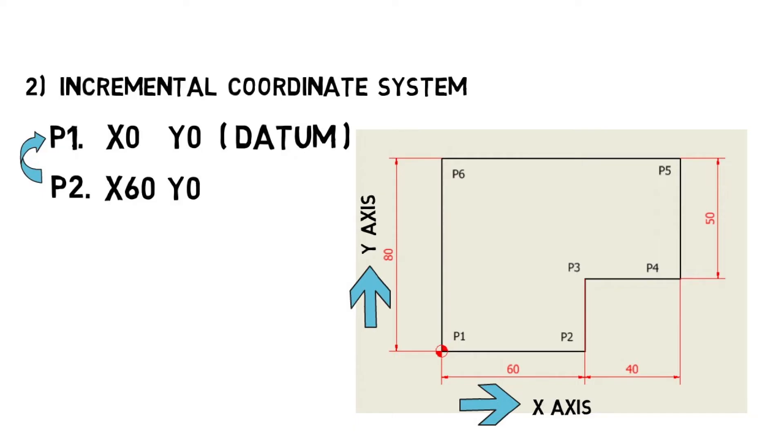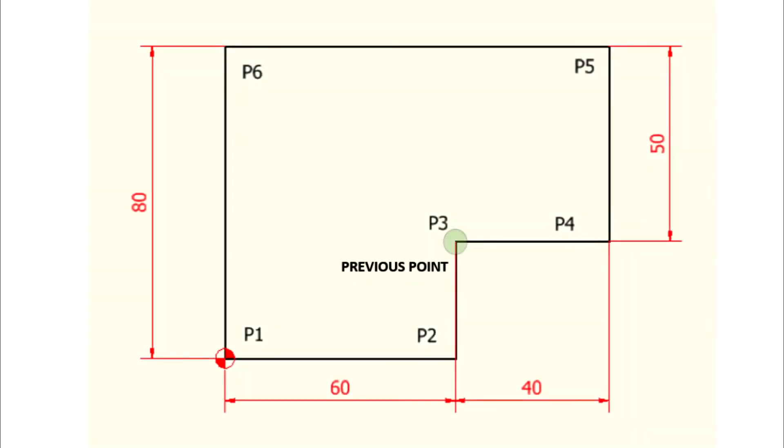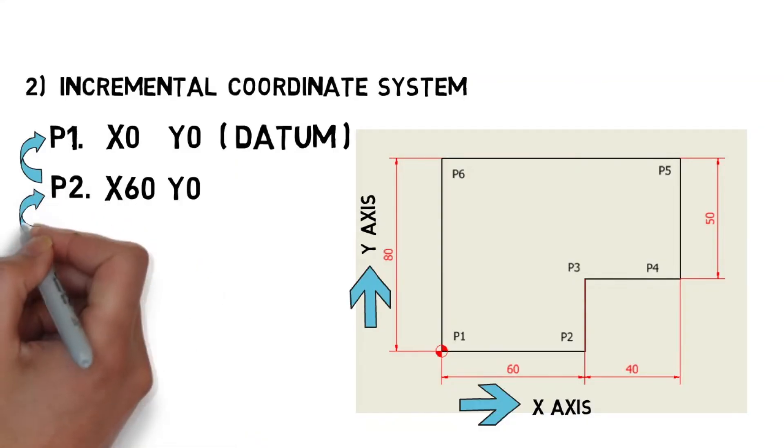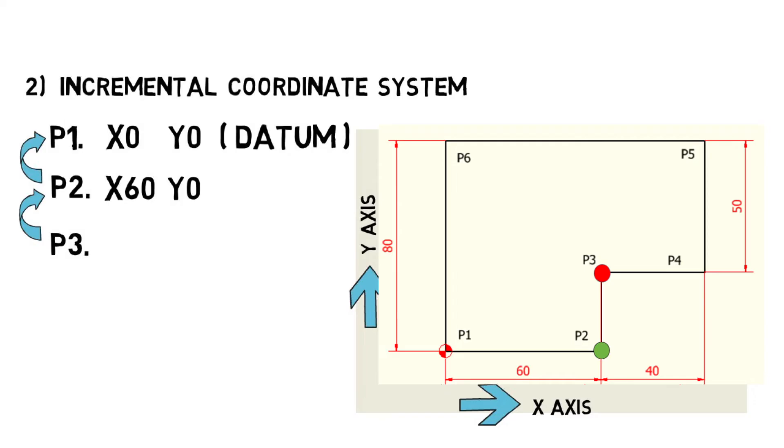Here we will explain more clear. In incremental coordinate system, the last point will be considered as origin for next point. So, for calculating P3, P2 is the origin. The value of P3 is X0 and Y30.